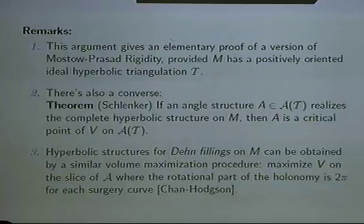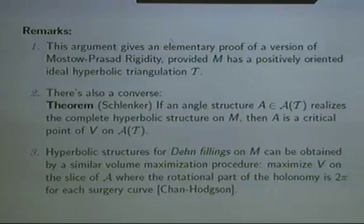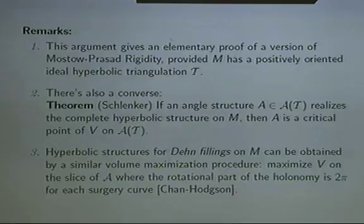There's also a kind of converse to this. We showed a critical point of volume in the angle structure space gives you a complete hyperbolic structure. The converse is also true: if you have an angle structure which gives you the complete hyperbolic structure, then it has to be a critical point of volume. So there's an if-and-only-if statement here.